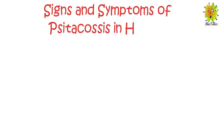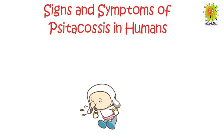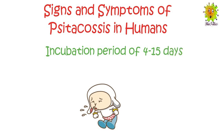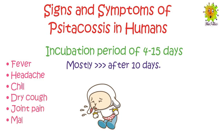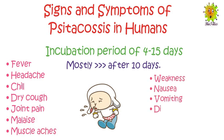In humans, the incubation period of 4 to 15 days is usually observed; however, in most cases symptoms appear after 10 days. Psittacosis infection in humans is associated with the following symptoms: fever, headache, chills, dry cough, joint pain, malaise, muscle aches, weakness, nausea, vomiting, diarrhea, loss of appetite, and intolerance to light.